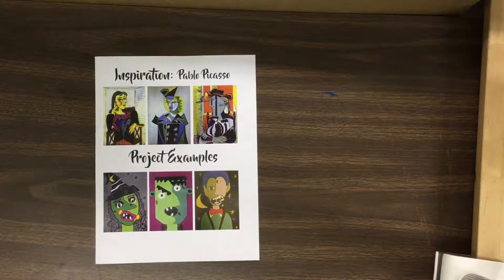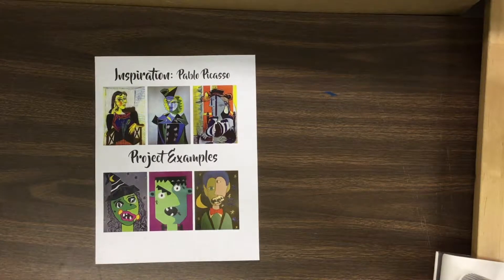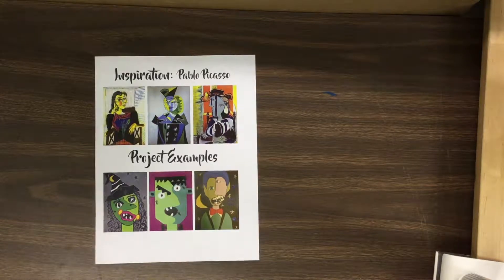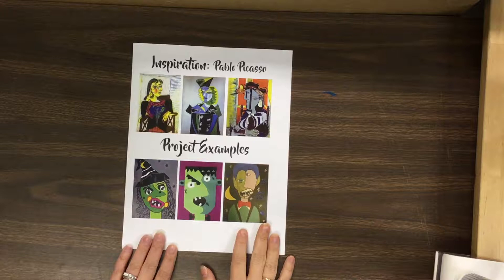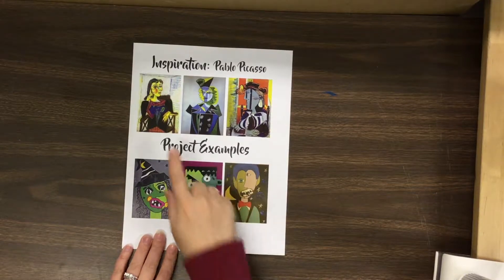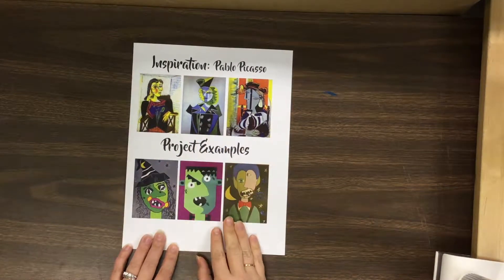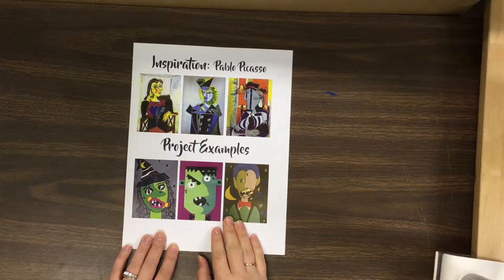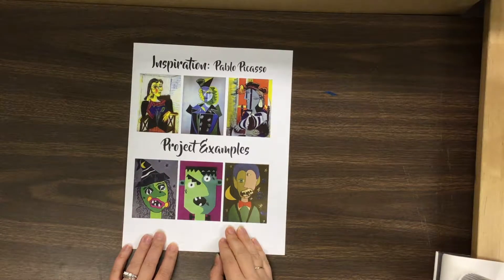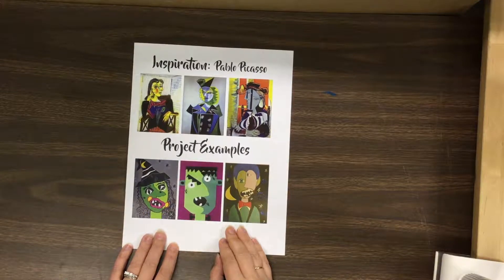Today we are going to be working on creating abstract portraits inspired by Picasso. The first thing we're going to do is look at this sheet that has some examples. Up here there are some examples of faces that Picasso did, and you can see how he shows the face facing forward and also in what's called profile — facing sideways — kind of at the same time.